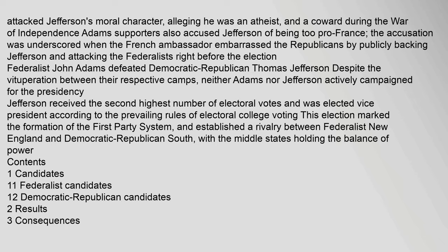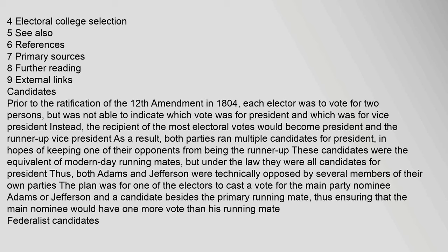Prior to the ratification of the Twelfth Amendment in 1804, each elector was to vote for two persons but was not able to indicate which vote was for president and which was for vice president. Instead, the recipient of the most electoral votes would become president and the runner-up vice president. As a result, both parties ran multiple candidates for president, in hopes of keeping one of their opponents from being the runner-up. These candidates were the equivalent of modern-day running mates, but under the law they were all candidates for president. Thus, both Adams and Jefferson were technically opposed by several members of their own parties.